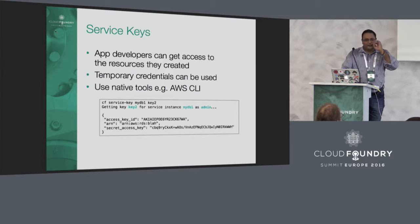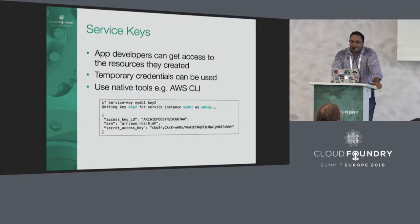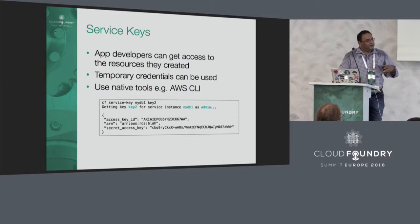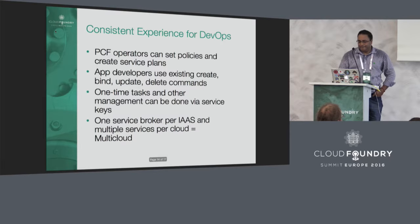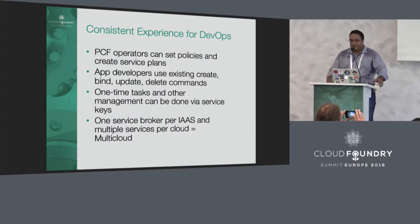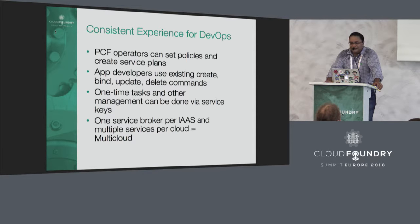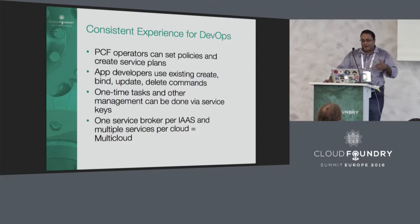We've also leveraged service keys in Cloud Foundry: app developers sometimes want to do more than create, bind, or delete a database instance — they may want to list tags on it or create a snapshot. We can use service keys to get temporary credentials that allow you to use the native cloud CLI. In the case of AWS, you get your keys and can use the existing AWS CLI. This gives you a consistent DevOps experience: PCF operators set policies and create service plans, app developers use existing create, bind, update, and delete commands, and do one-time tasks via service keys.